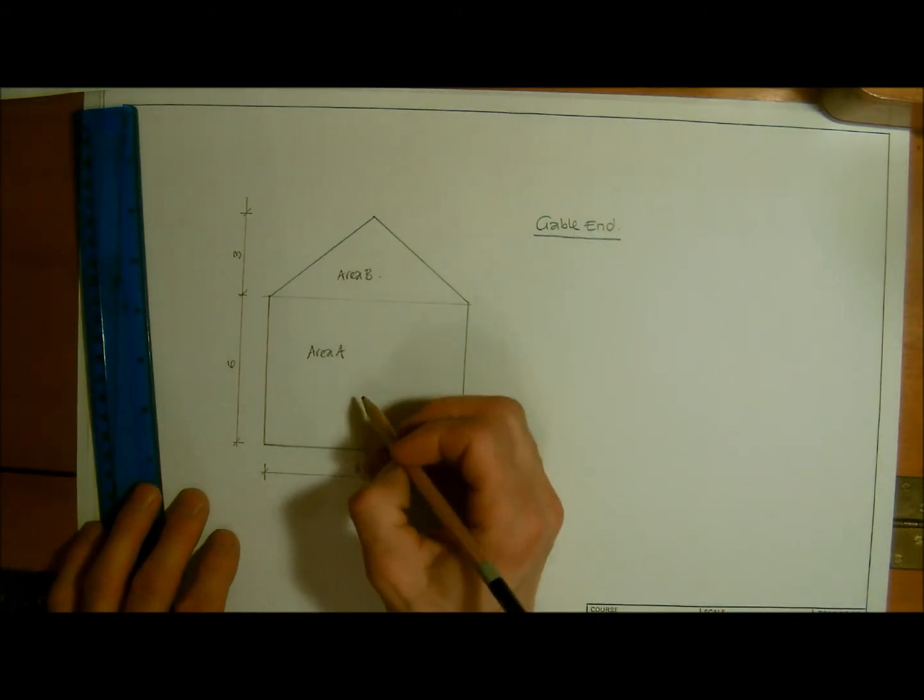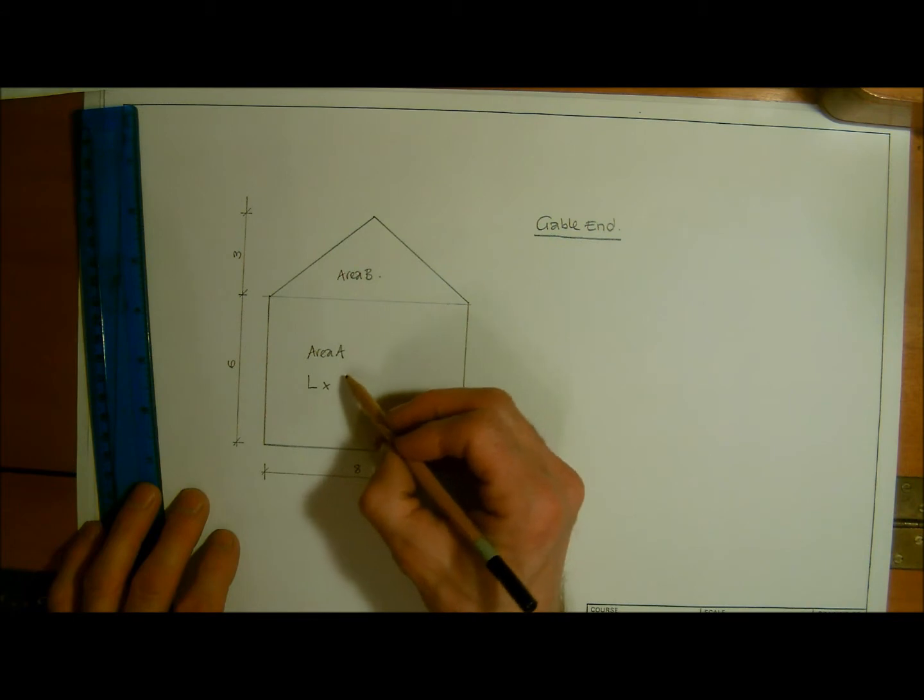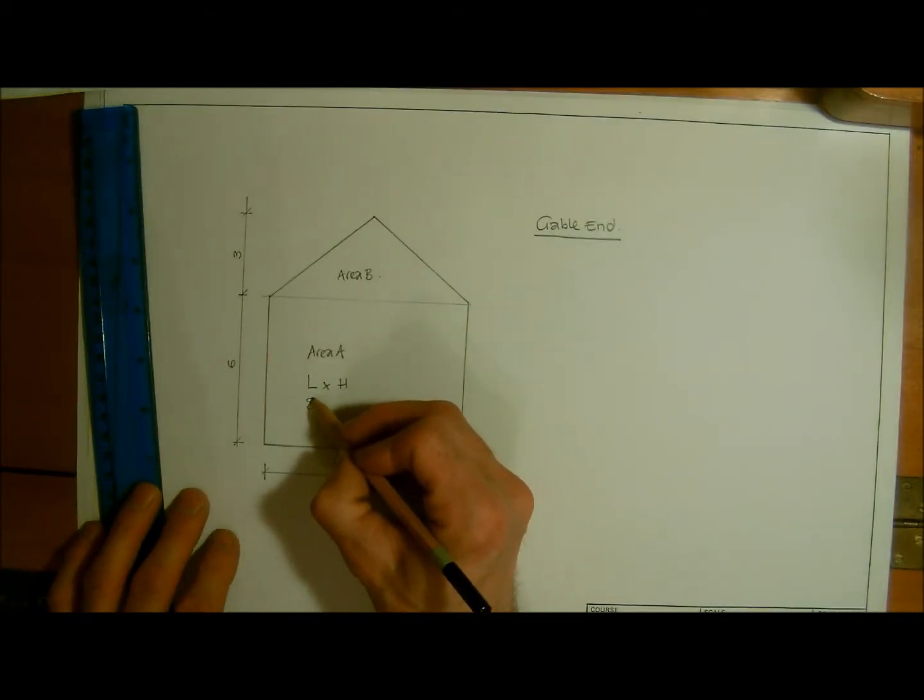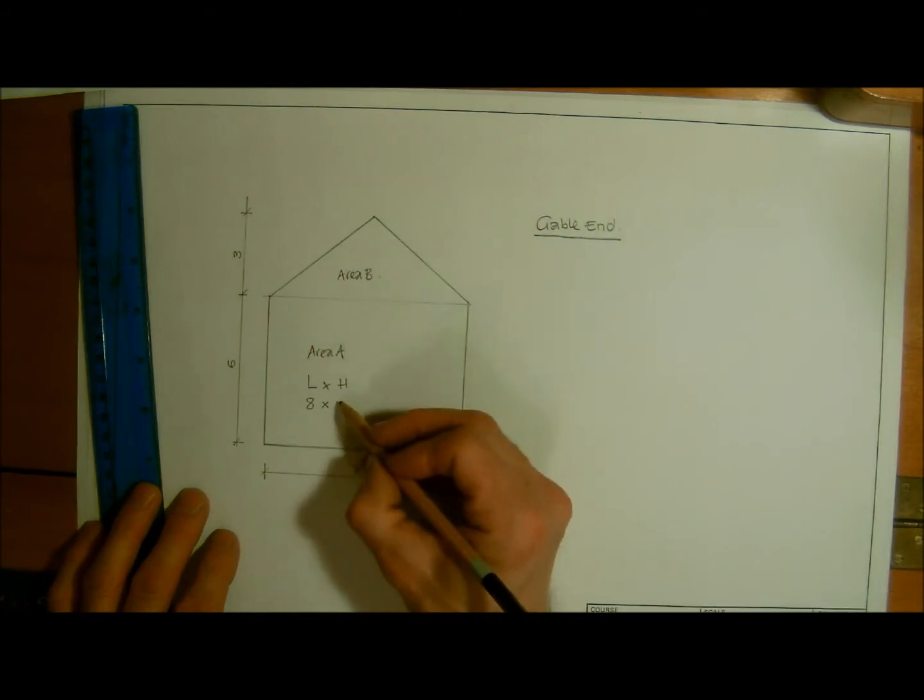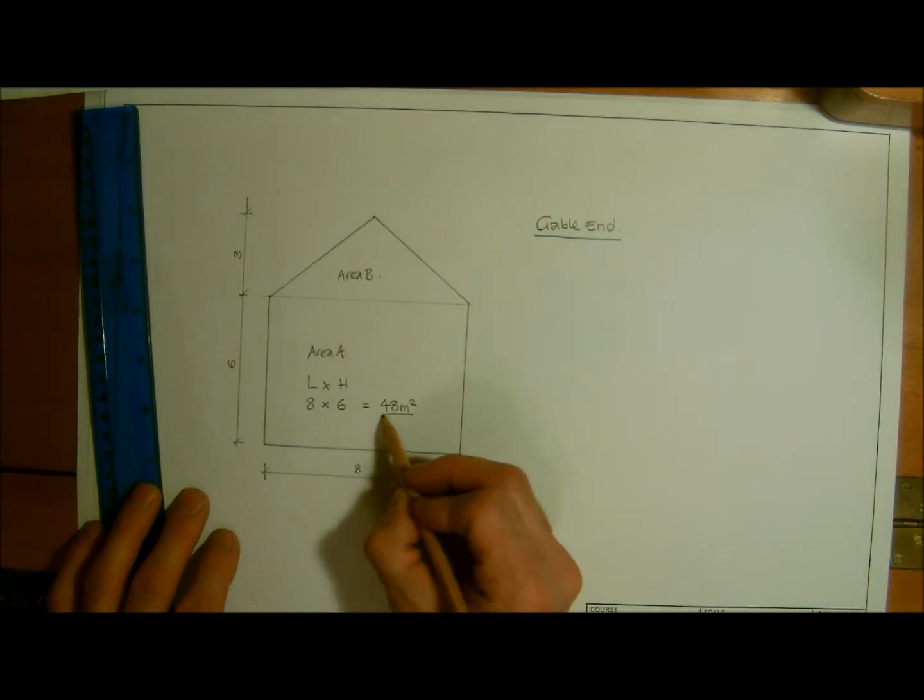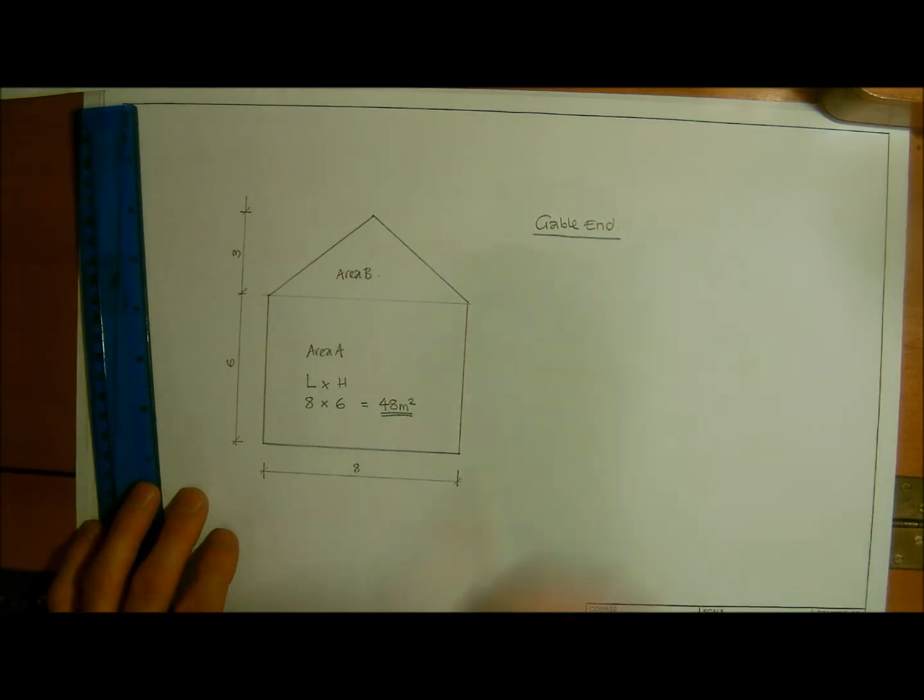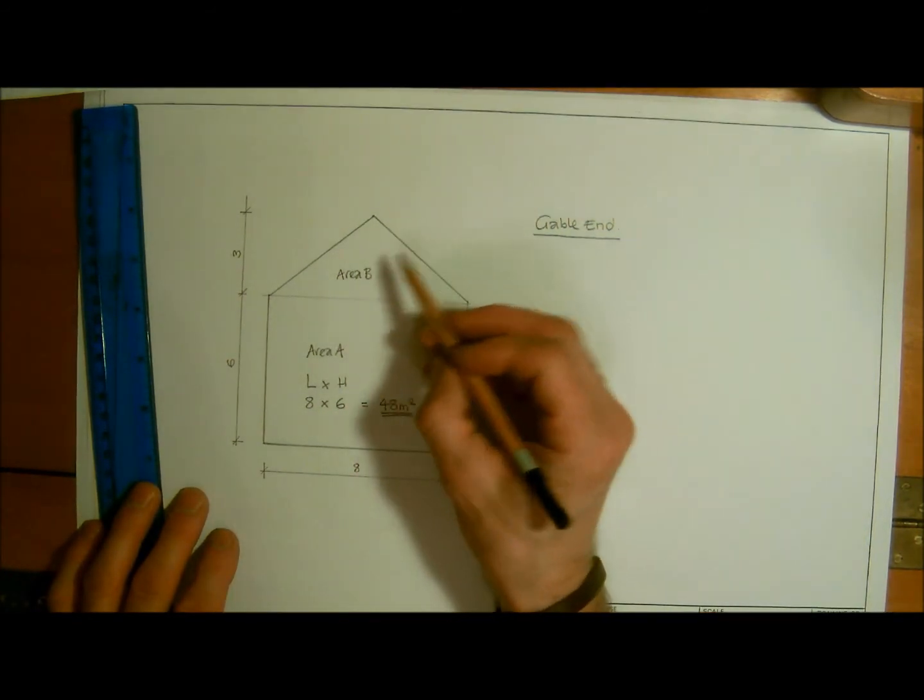The formula is what we did in the very first videos: length times height. So the length we have is 8 multiplied by the height which is 6. That is 48 meters squared. That one was easy to sort out.